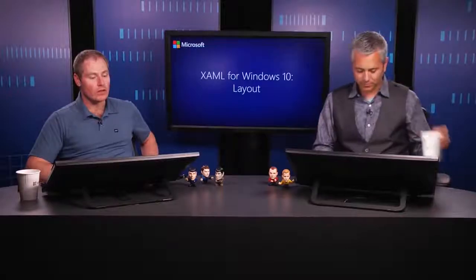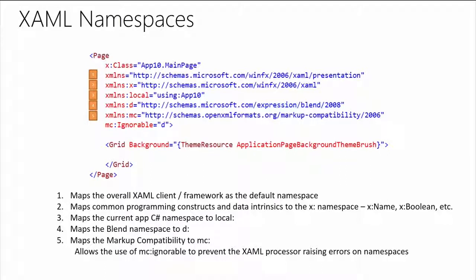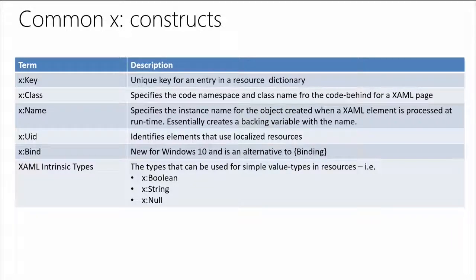Let's dive deeper into the X namespace, which gives us a number of key properties. We saw X:Class, which allows us to specify the code namespace and class name for the code-behind of a XAML page — very key to tying those things together. X:Key creates a unique identifier for an entry in a resource dictionary. Think of it like a key-value pair in a C# dictionary — it's the ID you use to find a particular resource.